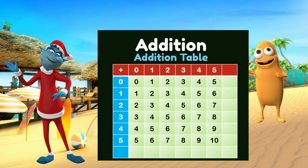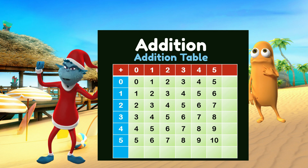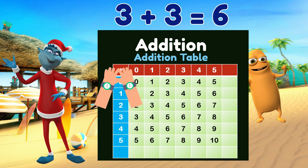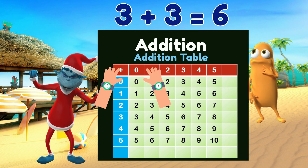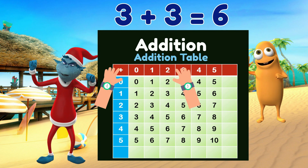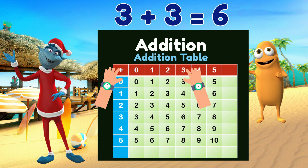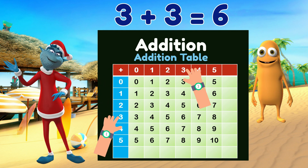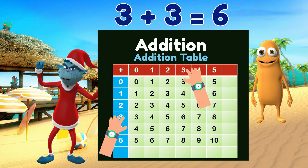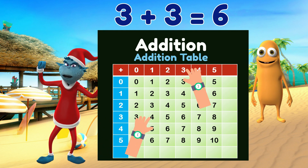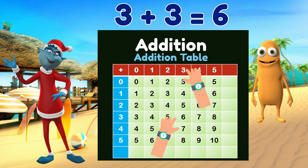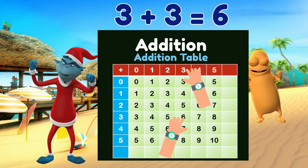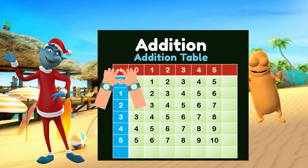Let us show you how to use it. The last example we used showed three plus three equals six — let's confirm it on the table. On the top row, colored red, point your right hand finger along to three and keep it there. Then on the leftmost column, colored blue, point your left hand finger down to three, then move your left hand along to the column where your right hand is pointing, which is three. There you'll find six, which is the answer to three plus three. Cool, right?